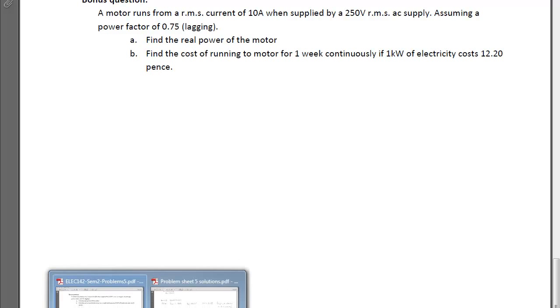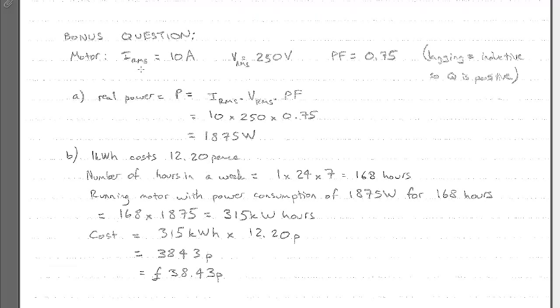So how do we go about solving this? Well, first of all, I've started by writing my important information. So this is a motor. We know that IRMS is 10 amps, VRMS is 250 volts.